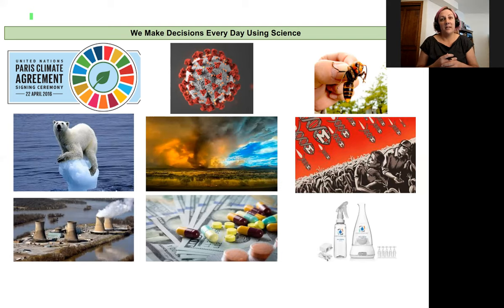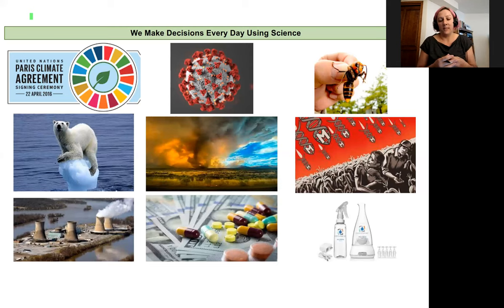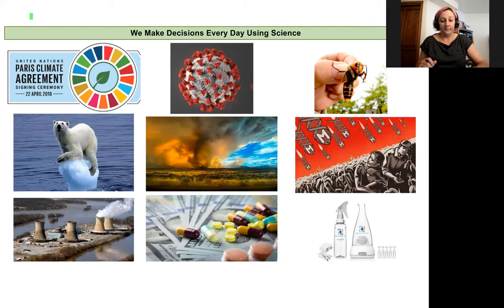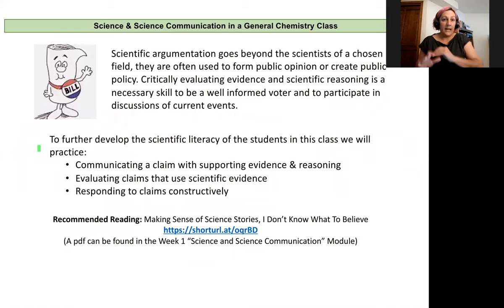I navigate opinions, policy decisions, and make choices based on the science that others do and are experts in. So it's important to be able to critically evaluate the information I'm processing as I seek to be an informed citizen. That's why I think science and science communication is a critical component of a general chemistry class.